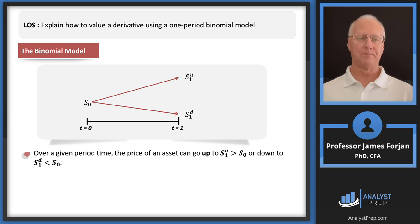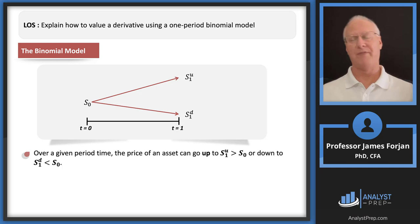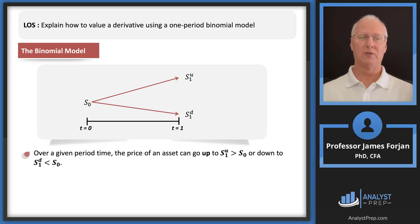Implicit in those upward and downward movements is a measure of volatility. For example, if the stock price today were 100 and a year from now it could be 150 or 50, there's way more volatility than in the 110/90 example. This binomial model accounts for that extra volatility.